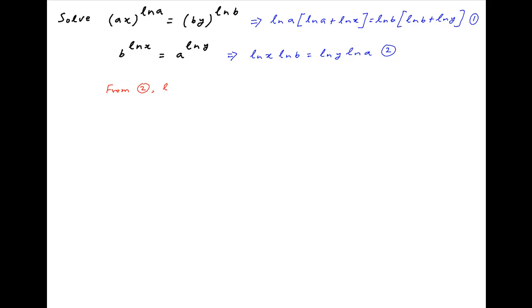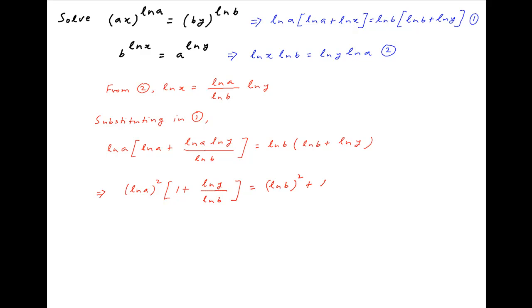From equation 2, we get lnx is equal to lnA upon lnB times lnY. Substitute this in equation 1. Now, we get lnA multiplied by lnA plus lnA times lnY upon lnB is equal to lnB times lnB plus lnY. This implies that lnA whole square multiplied by, in brackets, 1 plus lnY upon lnB is equal to lnB whole square plus lnB times lnY.